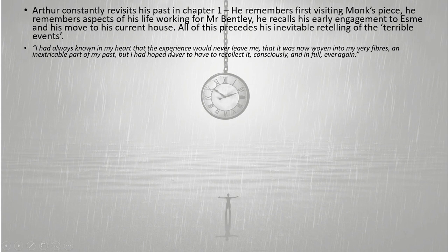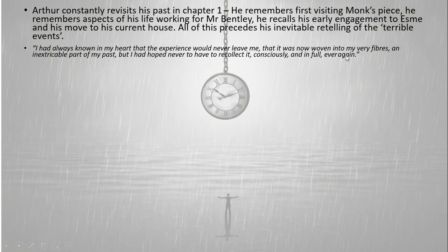Arthur is constantly revisiting his past. In chapter one, he remembers the first time he sees Monk's Piece, his working life with Mr Bentley, his early engagement to Esme, then moving to the house — all of this is a precursor to the retelling of the terrible events. As Arthur says, he'd always known it would never leave him; it was so much a part of him it was never going to go away, but he'd hoped he'd be able to bury it.